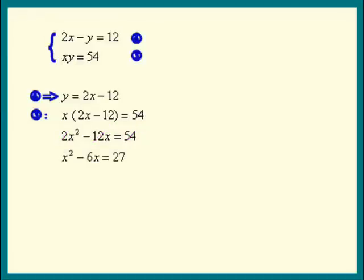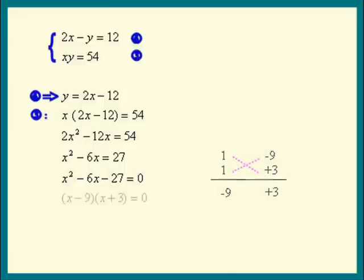To solve for X, we'll have to move the 27 over to the left side. And look, this factors very easily into (X minus 9) times (X plus 3) equals 0. That means X is either 9 or negative 3. But X can't be negative here, so our answer is X equals 9.